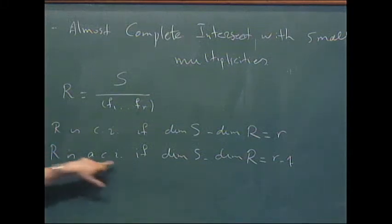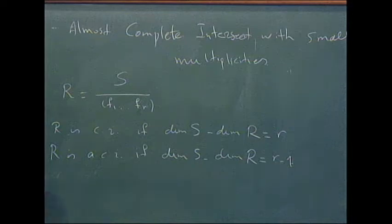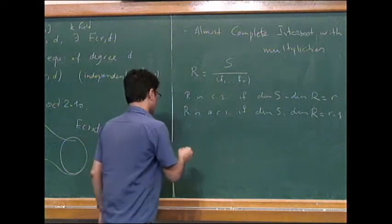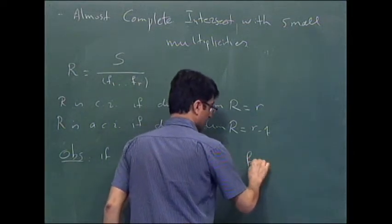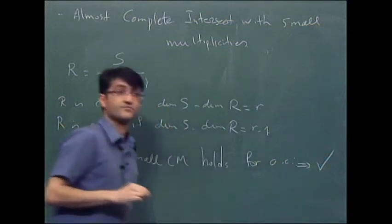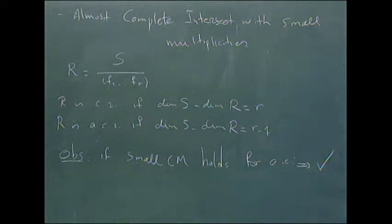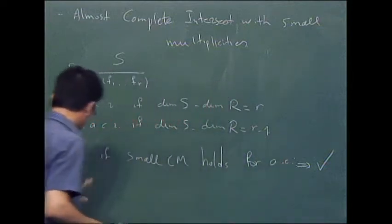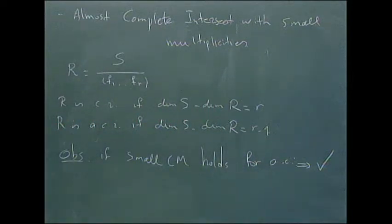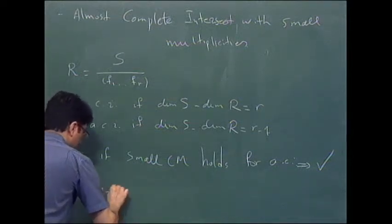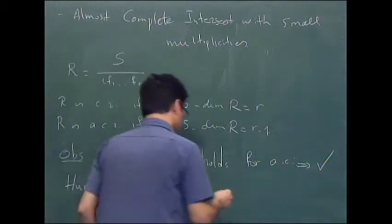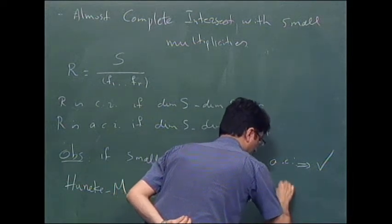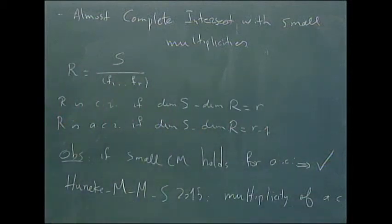For many years it was known that if one can prove the big Cohen-Macaulay conjecture for almost complete intersections, then it is true for any ring. But nobody could prove this for almost complete intersections. We started working on this question because we first observed that if the small Cohen-Macaulay conjecture holds for almost complete intersections, then it is true in general. Our motivation also came from studying a paper of Huneke, Monteiro, McCullough, and Celikbas from 2015.